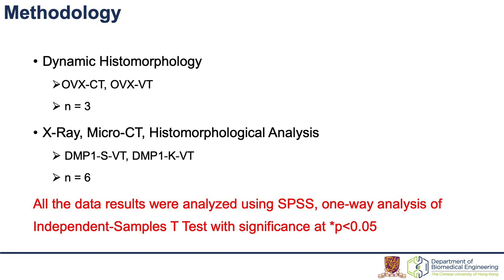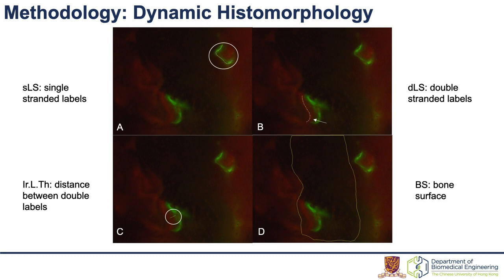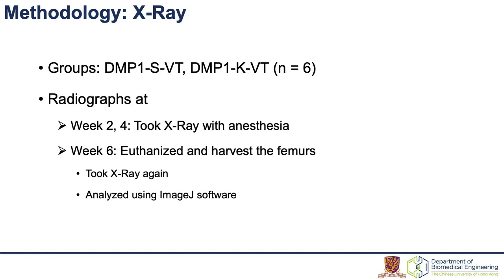In dynamic histomorphology, OVX control and vibration groups were used with three samples each. The sample size of DMP1 scramble and knockdown was 6. All results were compared using independent t-tests, with significance set at p less than 0.05. For dynamic histomorphology, the rats were injected with two dyes at week 1 and week 2 post-fracture respectively. Bone formation rate and mineral apposition rate were calculated using the following formulas. X-ray scans were performed at weeks 2, 4, and 6 after fracture induction to monitor fracture and healing conditions.